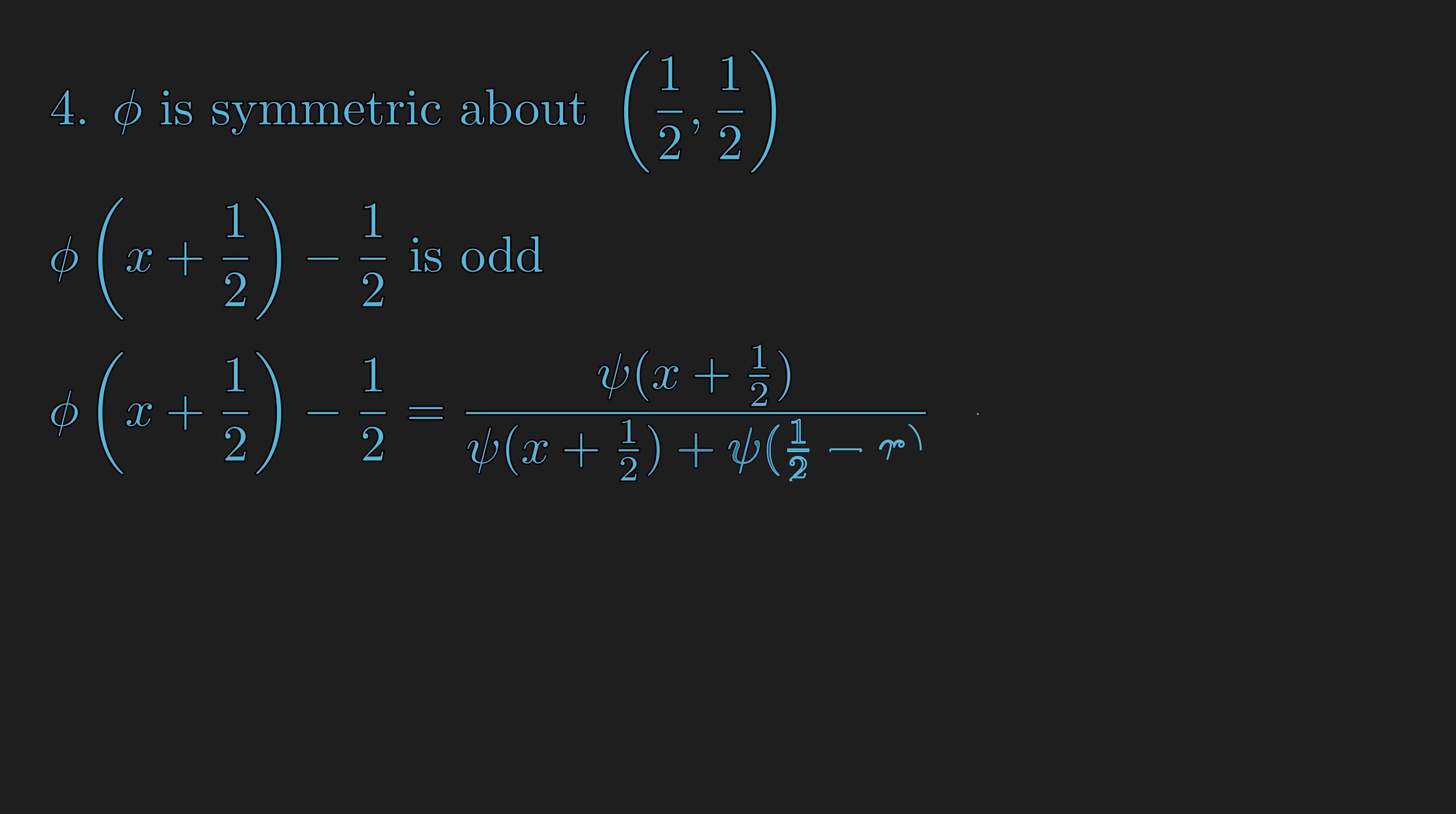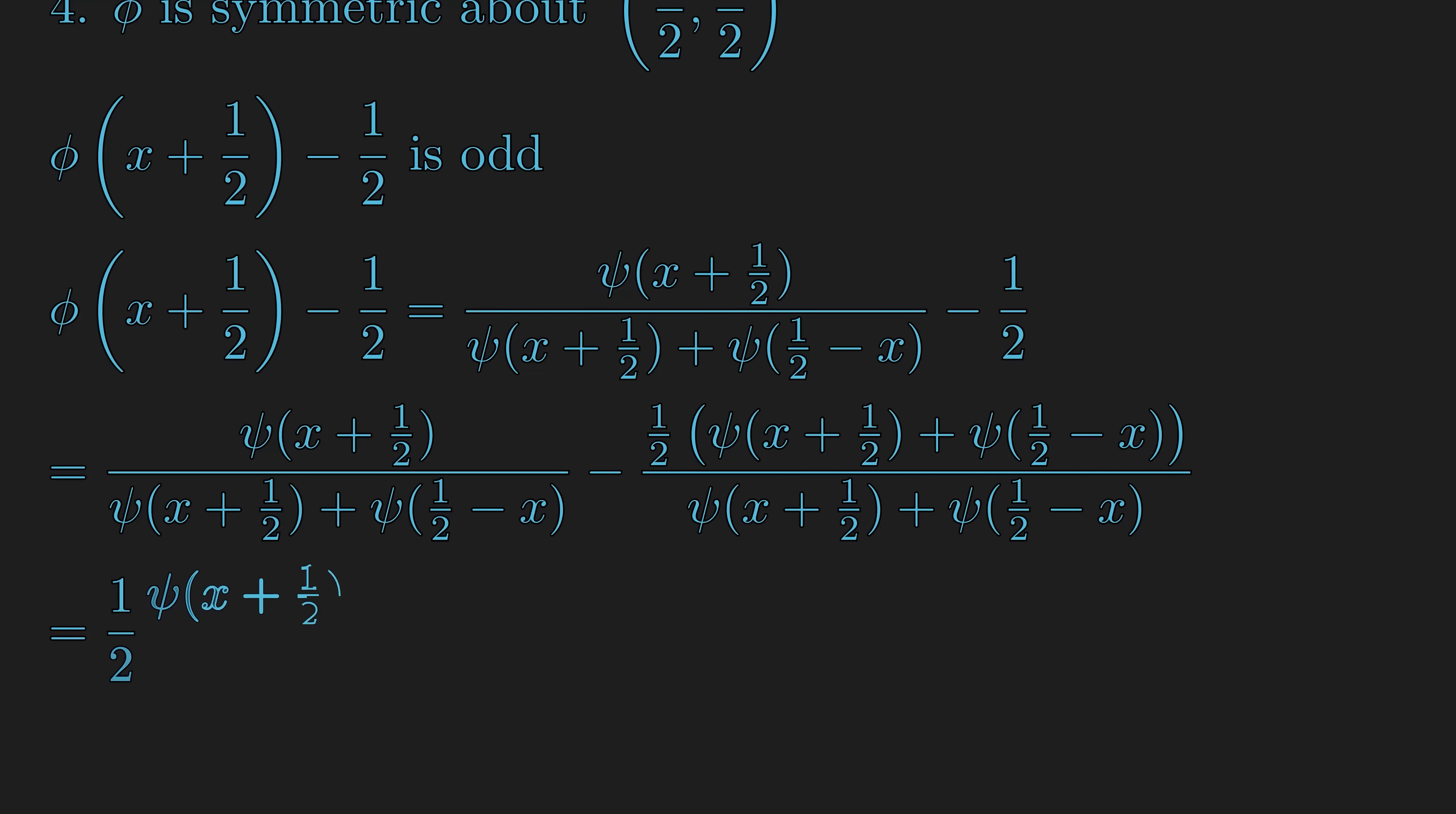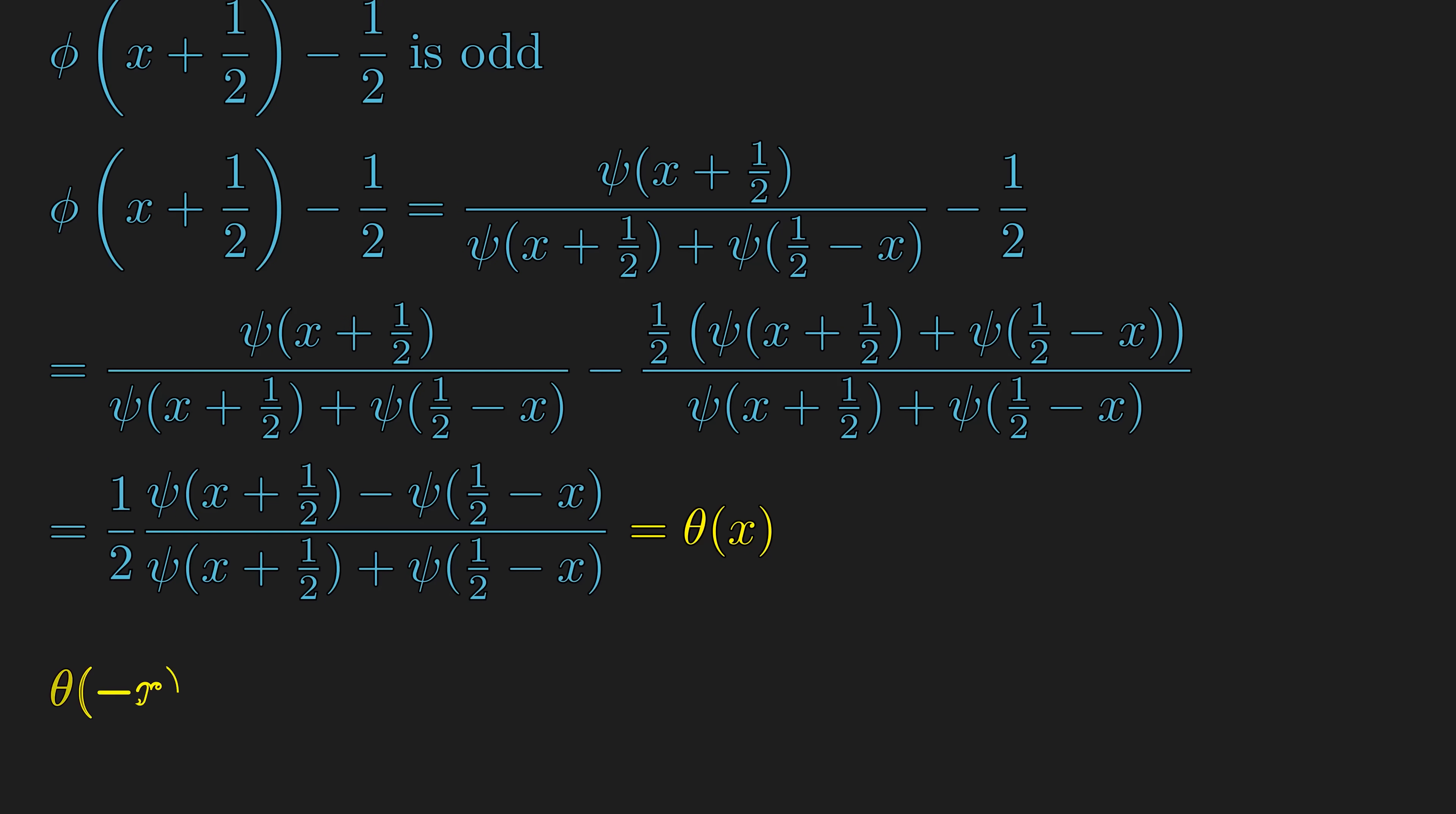In order to see that the transformed function is odd, we will first make each part have common denominator, and collect like terms. Let's temporarily call this transformed function theta(x), and now, we can evaluate theta of negative x, and that should come out to negative theta(x), which proves the odd symmetry of the transformed function.